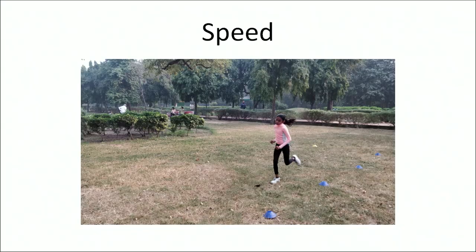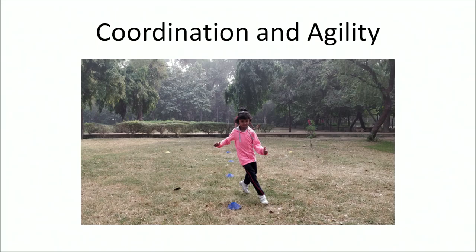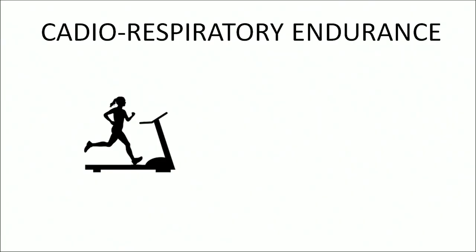Speed is the ability to execute motor movements with maximum effort in minimum time. Coordination and agility is the ability to perform a series of explosive power movements in rapid succession in opposing directions. Cardiorespiratory endurance is the quality that enables one to continue engaging in reasonably vigorous physical activities for an extended period of time.